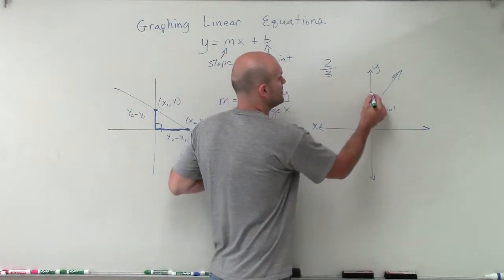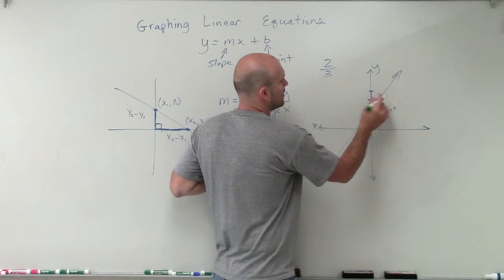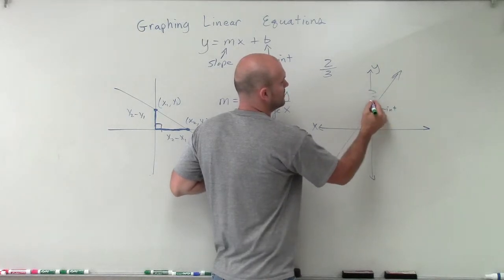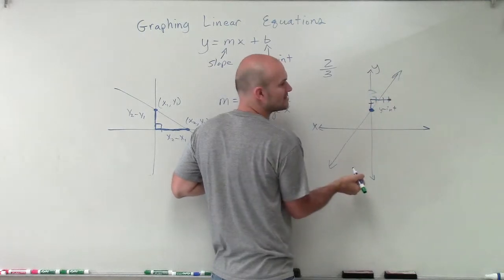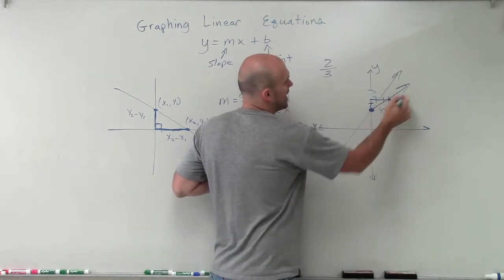So I would go up two units—up two units, and then over three units: one, two, three. And that would be my next point. And then I could draw a graph from there.